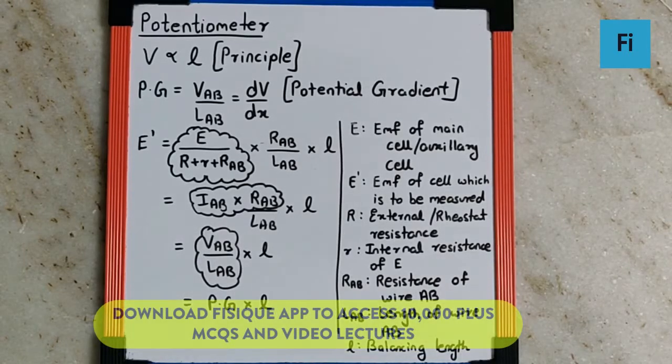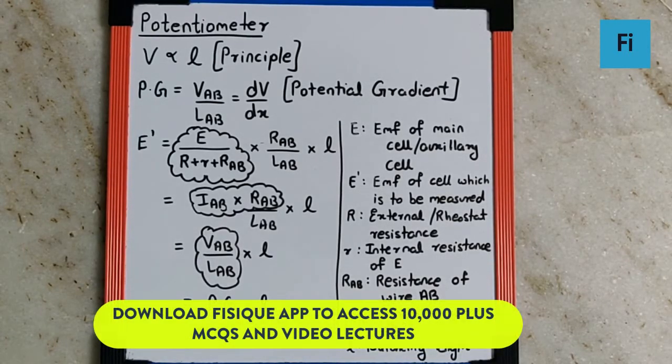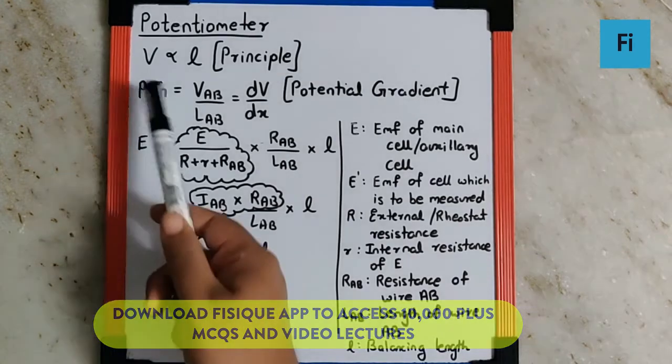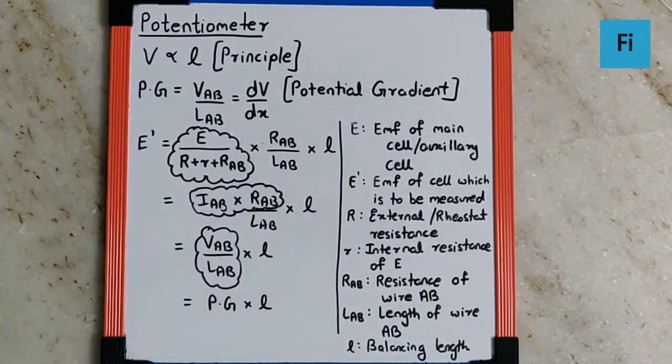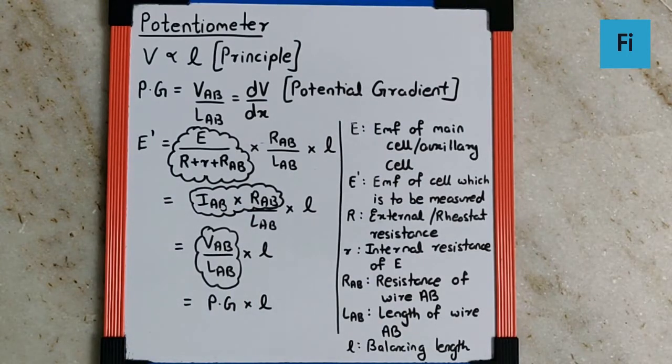The important points of potentiometer: the first thing is the principle, which says any potential difference can be measured using the length, provided the wire which is used is of uniform thickness and of the same material, so rho and A remains constant.